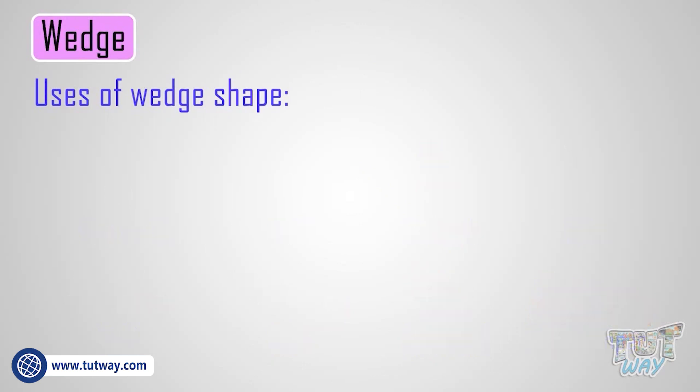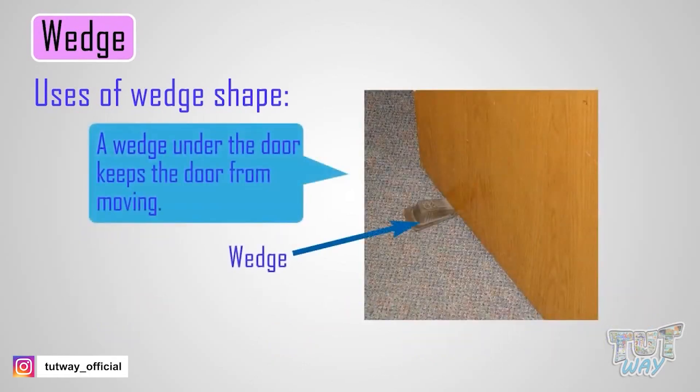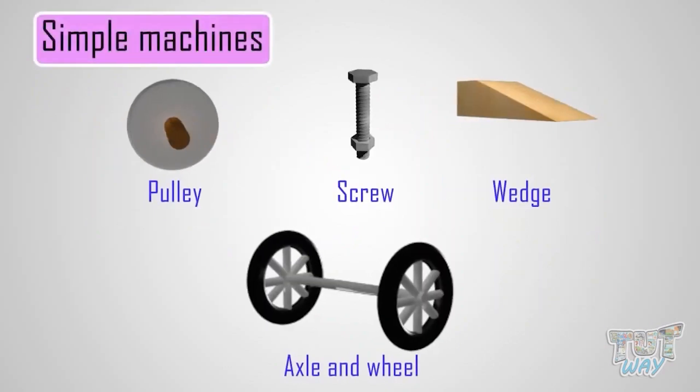A nail secures things. A wedge under a door keeps the door from moving. So kids, now we learned a lot about many types of simple machines.